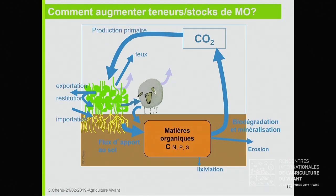Comment on fait ? Qu'est-ce qu'on fait ? Le cycle du carbone dans un agro-écosystème : la photosynthèse permet la production des végétaux, des exportations, restitutions, importations de matières organiques comme des fumiers ou des composts, ce qui fait le flux d'apport au sol. Et puis il y a des pertes : de toutes petites pertes dans les agro-écosystèmes tempérés ou tropicaux avec l'eau de pluie, des pertes qui peuvent être importantes par érosion, et l'essentiel des pertes par biodégradation et minéralisation, activité des organismes vivants du sol.